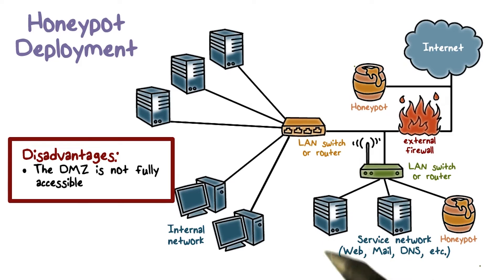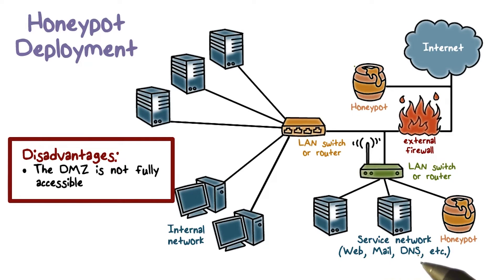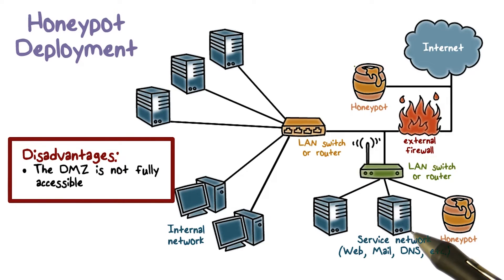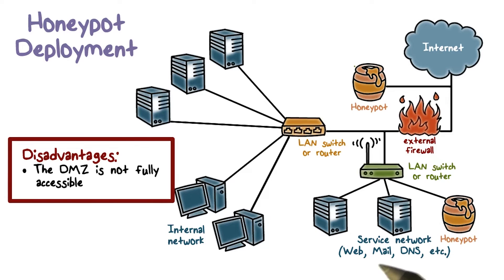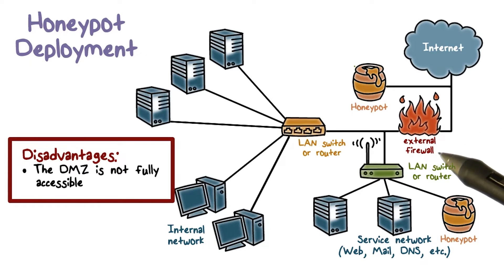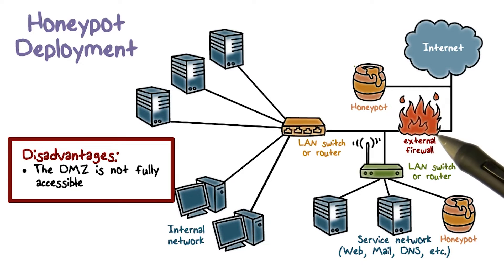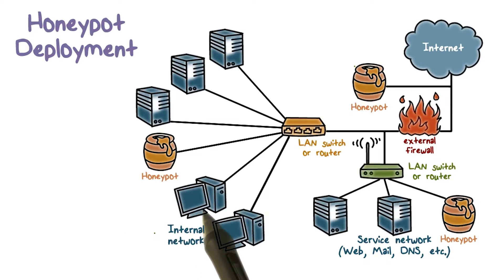This is because a DMZ is typically not fully accessible — other than the well-defined public-facing services, no other services are supposed to be available in the DMZ. So if an attacker is attempting to access the honeypot and the service is not one of those well-defined public-facing services, the firewall is going to block the traffic. If we allow the firewall to pass traffic to the honeypot, this would mean opening up the firewall, which is a security risk.